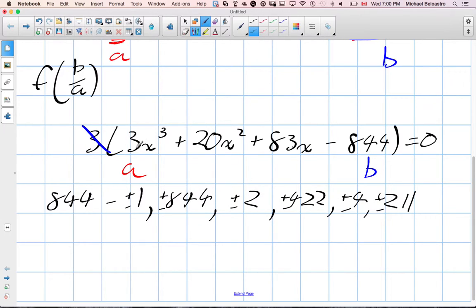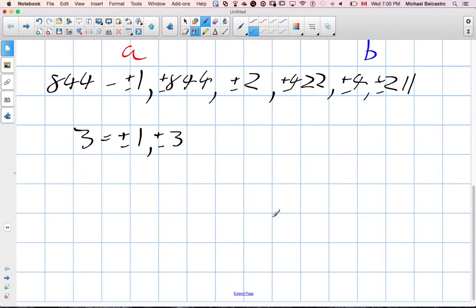A value is very simple - it's just a value of 3. So we're using 1 and 3, and plus and minus both of these. So when we put these all together, these are our b options and these are our a options.